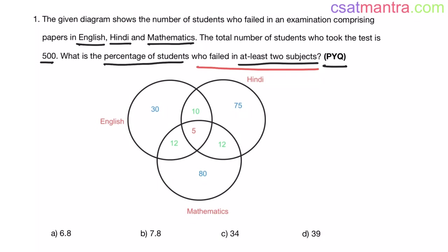The number of students who failed in two subjects equals 10 plus 12 plus 12. 10 is the number of students who failed in English and Hindi, 12 is the number who failed in English and Mathematics, and 12 is the number who failed in Hindi and Mathematics.